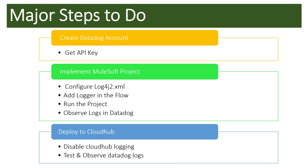We will add a logger directly into the flow. By default, when we add a logger, logs become available in the Anypoint Studio console, and when deployed to CloudHub they appear in the logging feature there. We will then see how to log directly into Datadog instead. We'll run the project and observe logs in real time in Datadog. Then, instead of running from Anypoint Studio, we'll deploy to CloudHub, and I'll show you how to disable CloudHub logging so all logs go only to Datadog.